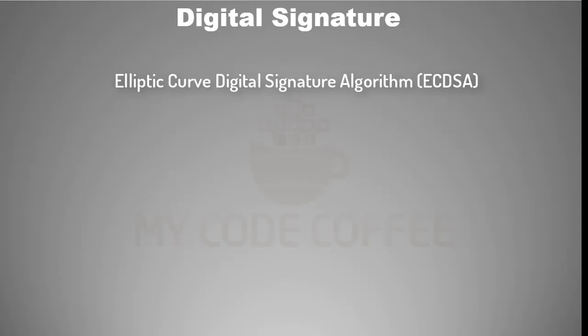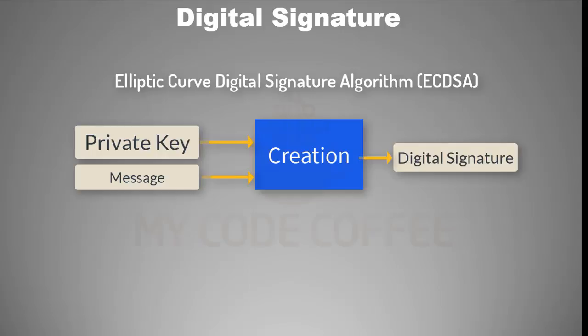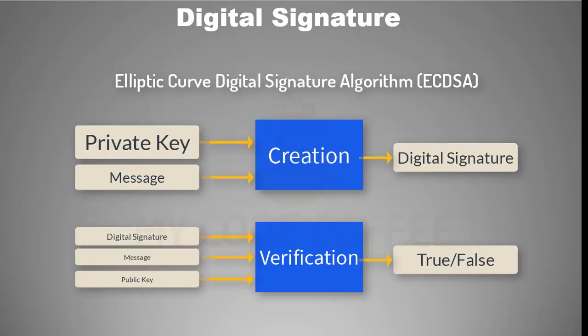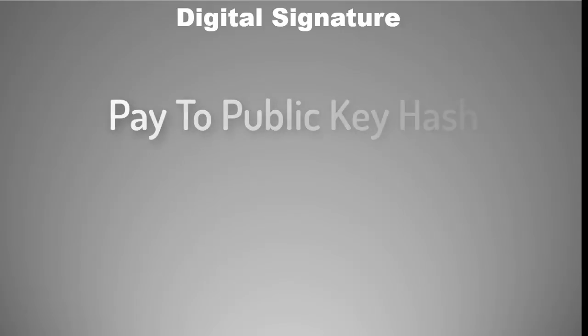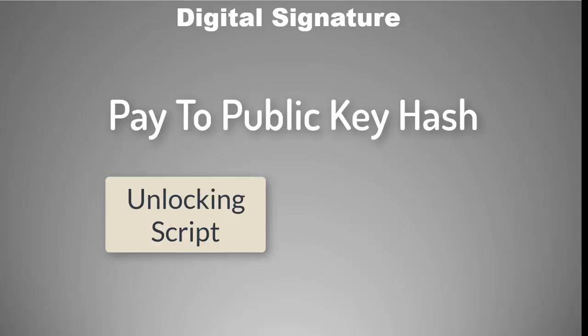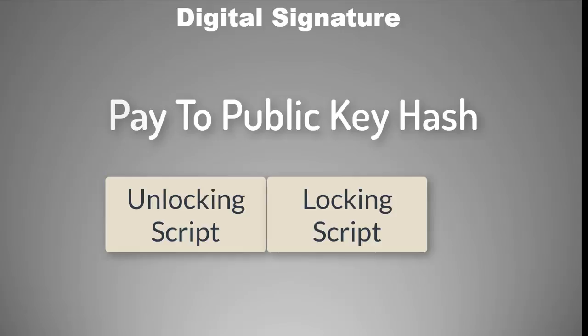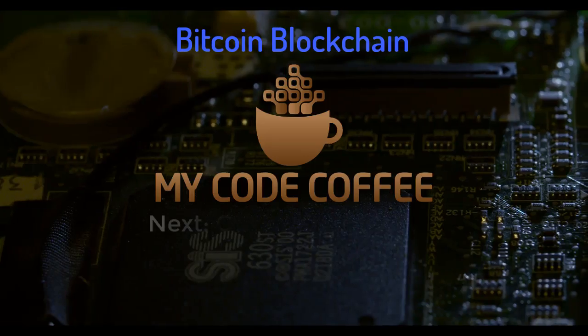In this chapter we covered ECDSA — the Elliptic Curve Digital Signature Algorithm — which is used to create and verify digital signatures. We saw that a digital signature is created using a private key and transaction data, and verification is done using the digital signature, transaction data, and the public key. Now that we know what a digital signature is and how it is verified, it is time to understand the process of P2PKH — Pay to Public Key Hash — where you use the unlocking script of a transaction input to unlock the locking script of a transaction output.